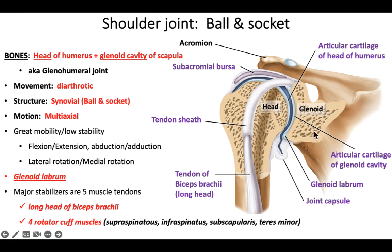Looking at the image, we can identify: the acromion of the scapula, the glenoid, and the head of the humerus. There's a tendon with a tendon sheath surrounding and protecting it. There is a subacromial bursa — named because it's just beneath the acromion — which cushions between the acromion and humerus, particularly around the supraspinatus muscle. We also see the capsule, and inside the capsule is the joint cavity containing synovial fluid. Each bone has articular cartilage — on the head of the humerus and on the glenoid.